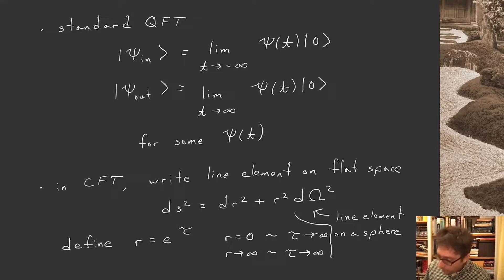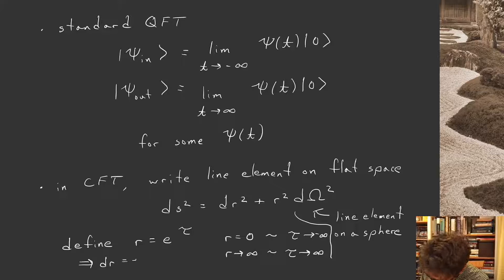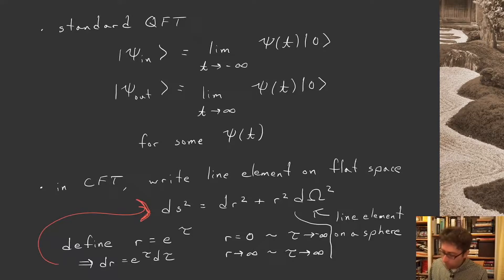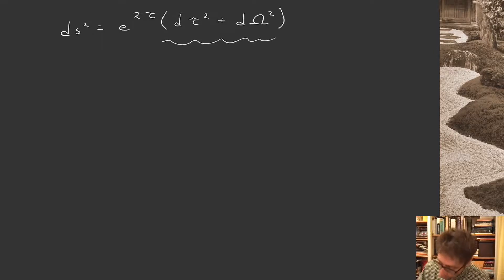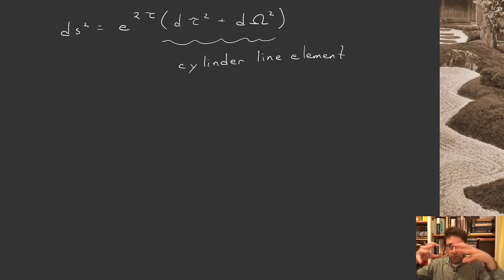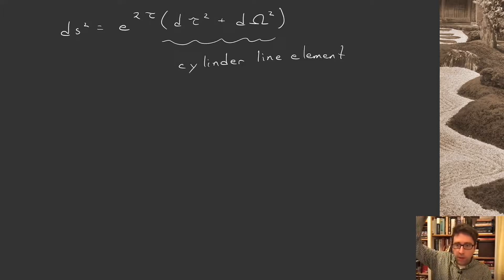So if I do this, let's see what happens to my line element in the new coordinates. If r is e^τ, then a little dr is e^τ dτ, and then I'm going to plug this expression back into my line element on the next page and see what I get for a new line element. I'm going to find that ds² I can now write as e^{2τ}(dτ² + dΩ²). This little bit here, I can think of as a metric on a cylinder or a line element on a cylinder. So I have these spheres at each value of τ, and then I have τ which runs from minus infinity to infinity. And then there's this overall conformal scaling factor in front, which I won't worry about too much.